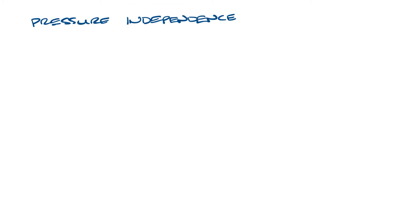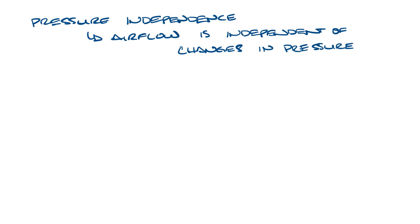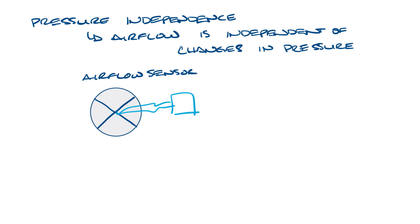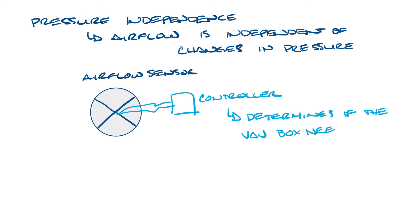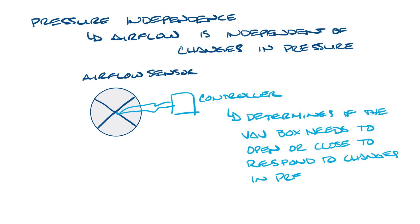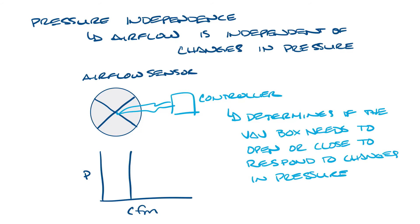Now let's look at pressure independence. In a pressure independent VAV box, the airflow volume is independent of changes in pressure. Pressure independent VAV boxes have flow sensors that measure the pressure in the box and send this information to a controller. If the three VAV boxes in that last example were pressure independent, then when the conference room box opened and the pressure in that duct run went down, the controllers on the other VAV boxes would determine whether to open or close the dampers to maintain the airflow through those boxes. If you were to graph airflow versus pressure in a pressure independent VAV box, it would look something like this, where the CFM stays the same as the pressure changes.